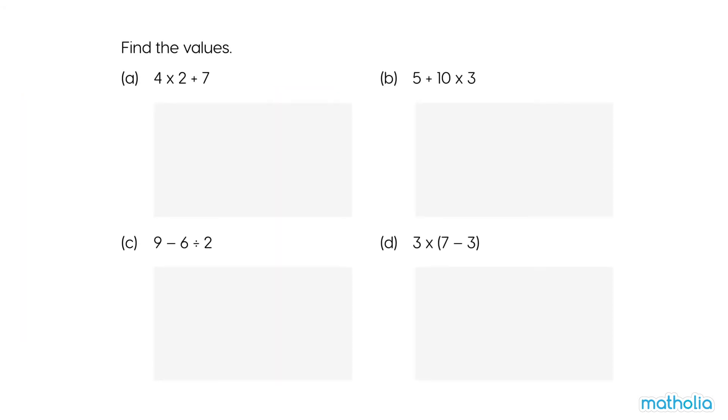Find the values. A. 4 times 2 plus 7. Multiply first. 4 times 2 equals 8. 8 plus 7 equals 15. So, 4 times 2 plus 7 equals 15.